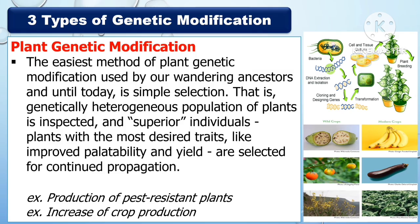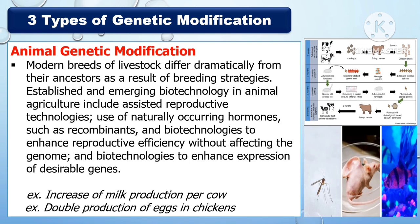The following are the 3 types of genetic modification. The first one is plant genetic modification. The easiest method used by our ancestors and still used today is simple selection — a genetically heterogeneous population of plants is inspected and superior individuals with the most desired traits, like improved palatability and yield, are selected for continued propagation. Examples include the production of pest-resistant plants and the increase of crop production.